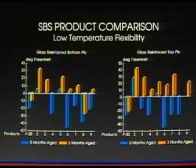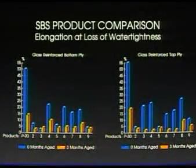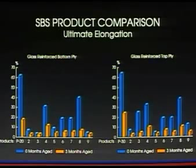As you can see, their superiority is obvious in such important areas as cold weather flexibility, elongation at loss of water tightness, and ultimate elongation. What does all this mean? Simply that on the roof, where the product must perform, some won't.